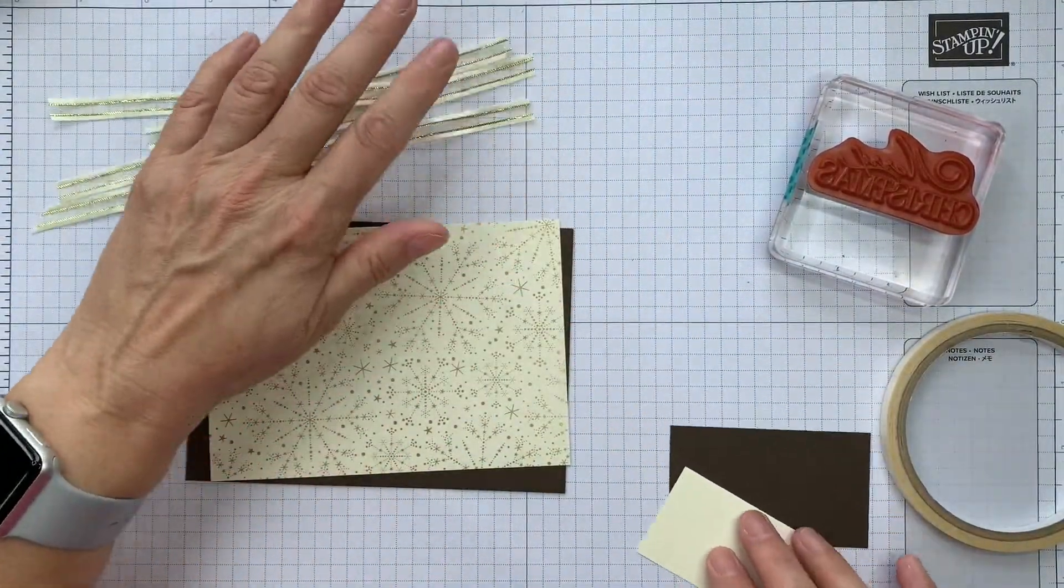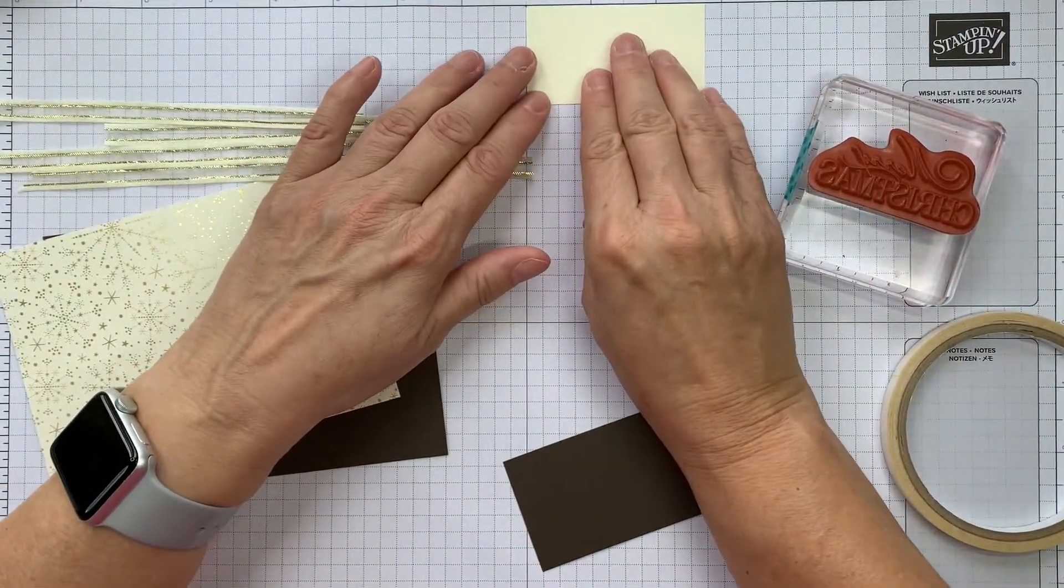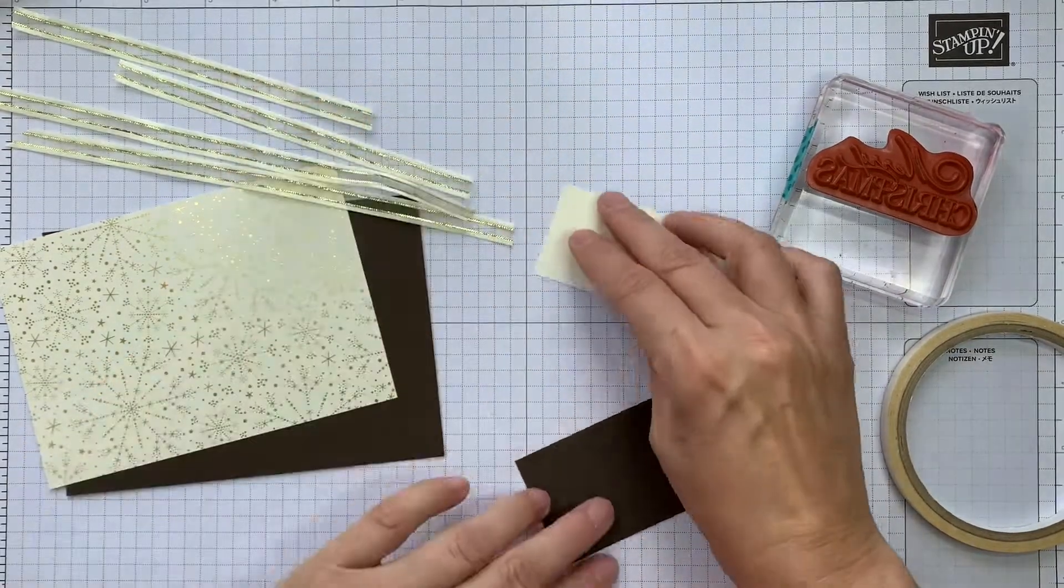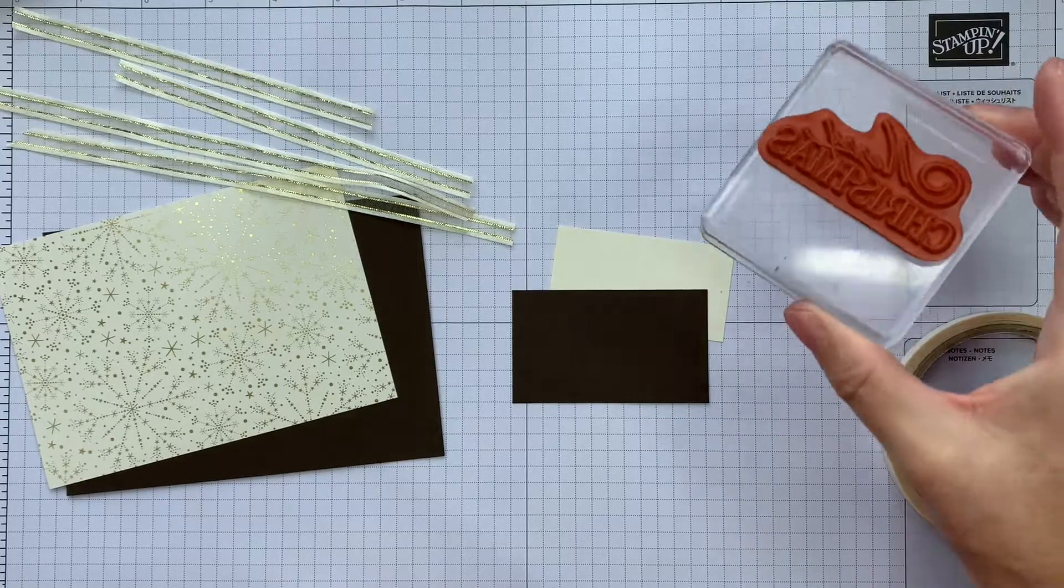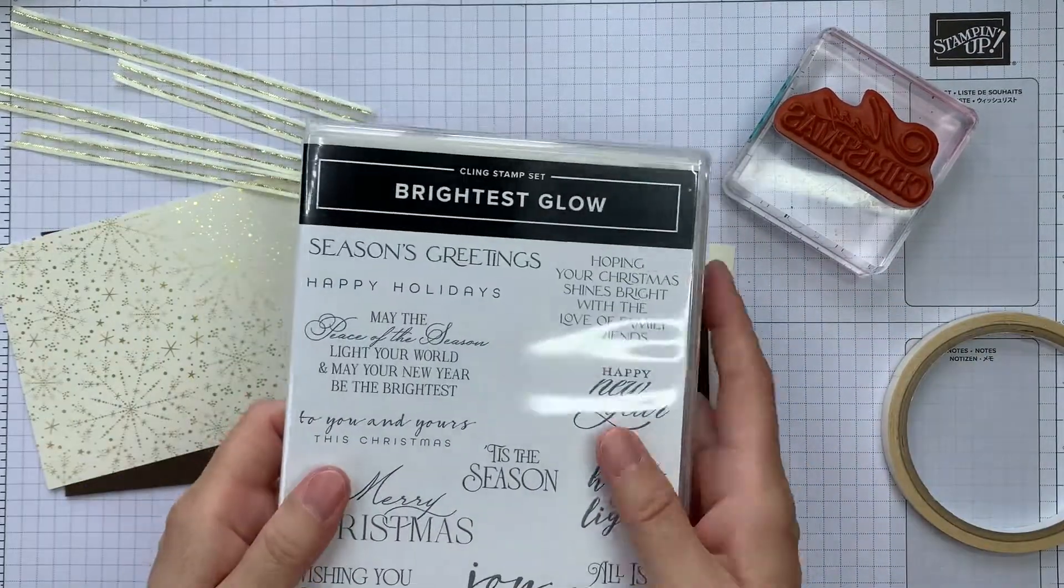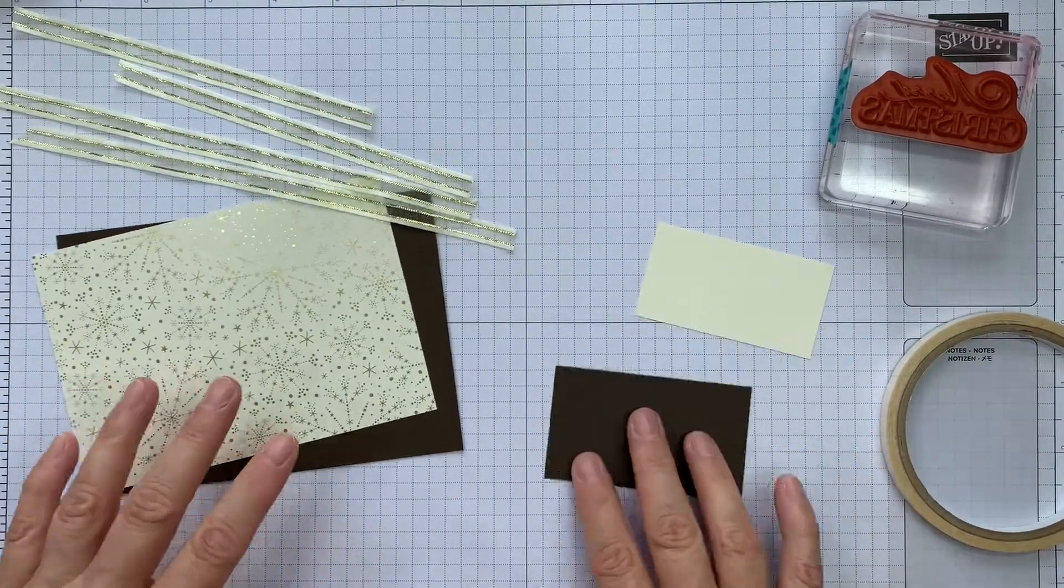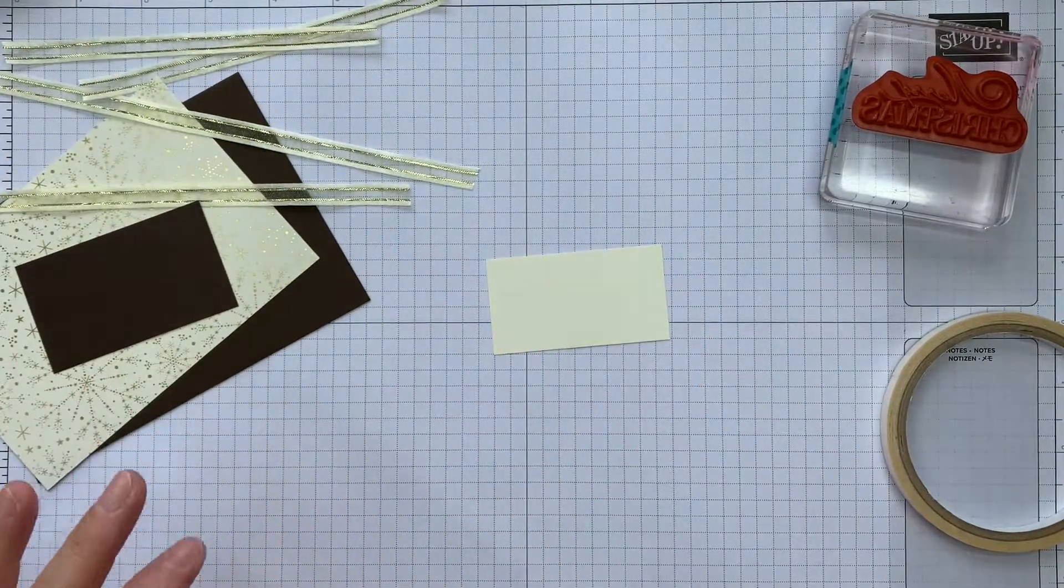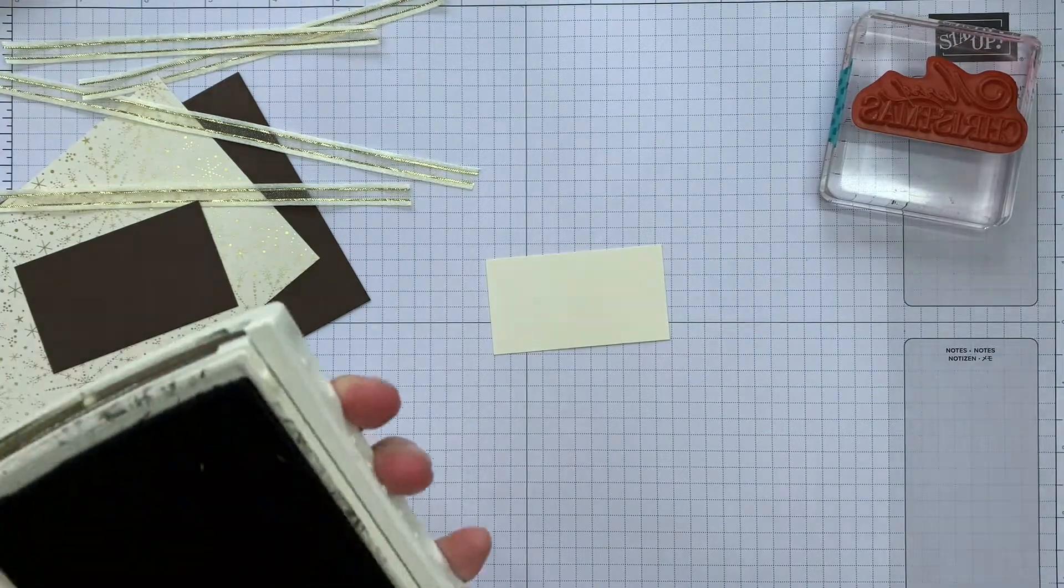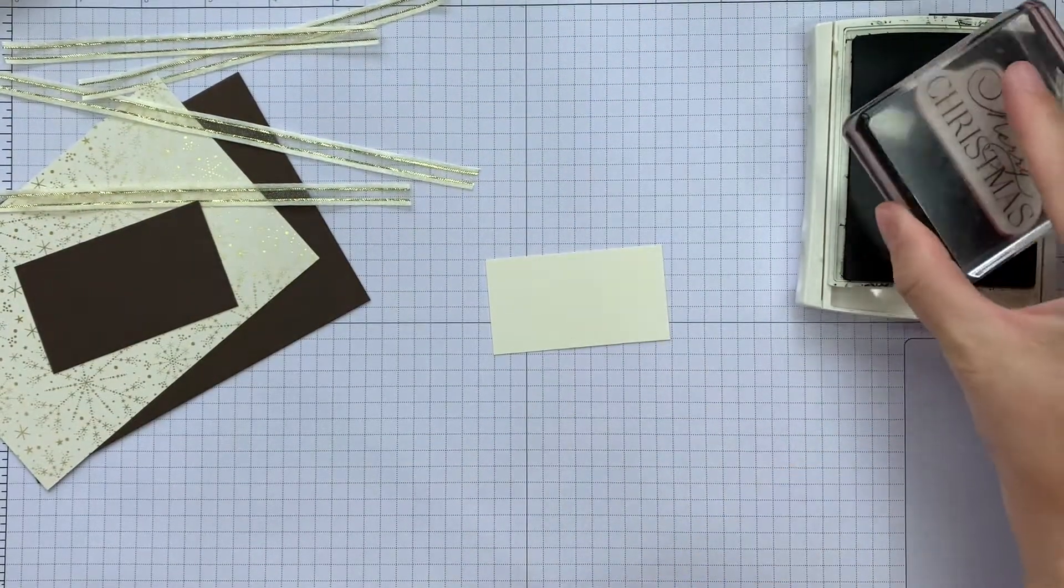I've also cut myself some sentiment layers. This one is two and three quarters by one and a half. But I've cut that particularly to fit this sentiment. This sentiment is from the Brightest Glow Set. Just a simple Merry Christmas. And I'm just going to stamp that with some Early Espresso ink. And you could make this a different size to fit your sentiment.